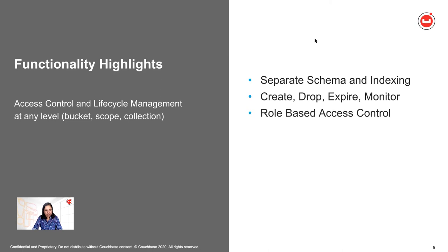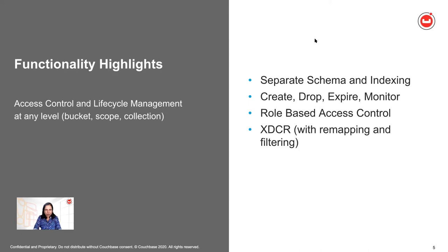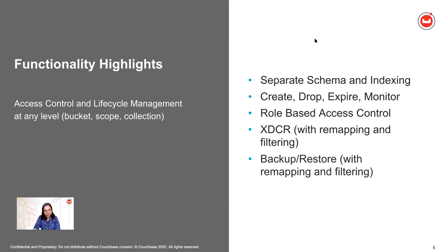Security control via role-based access control will be available at these additional levels, and I will talk more about how this will work when you have three levels of hierarchy. XDCR — our cross data center replication — is often used to set up a disaster recovery strategy, to have data local to geo-distributed users, or to scale reads and writes by having certain parts of your data replicated to multiple clusters. With collections and scopes, you can set up replication not only at bucket level but also at these additional levels, along with the ability to remap and filter subsets of data.